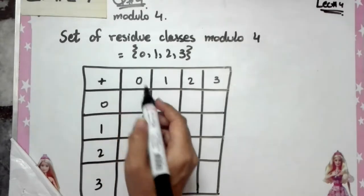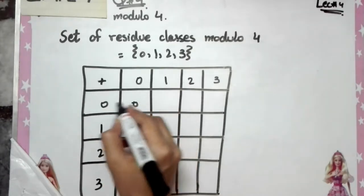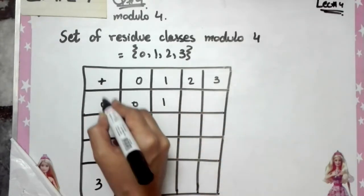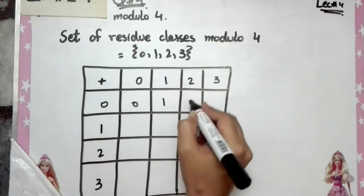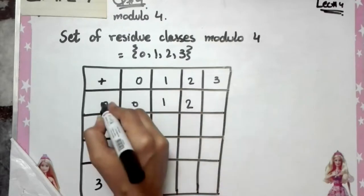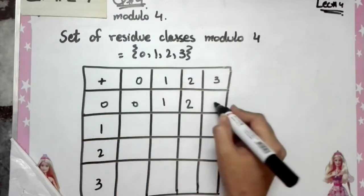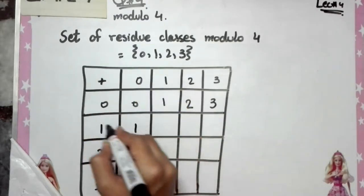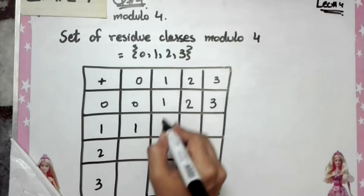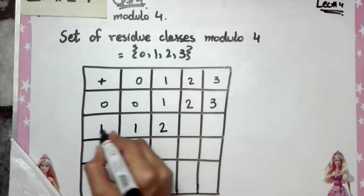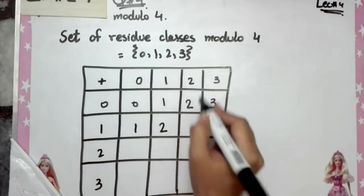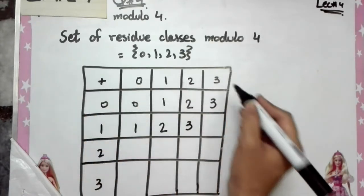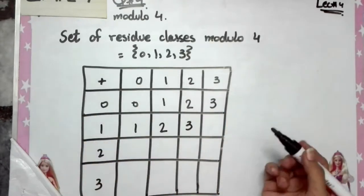Now filling in the table: 0 plus 0 is 0; 0 plus 1 is 1; 0 plus 2 is 2; 0 plus 3 is 3. Then: 1 plus 0 is 1; 1 plus 1 is 2; 1 plus 2 is 3; and 1 plus 3 is 4.